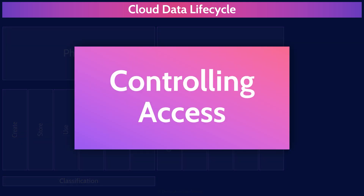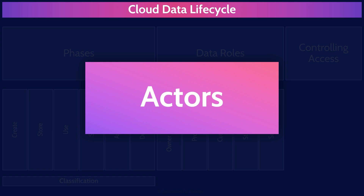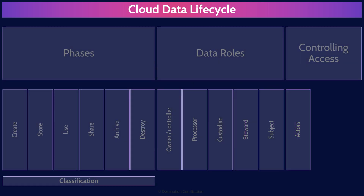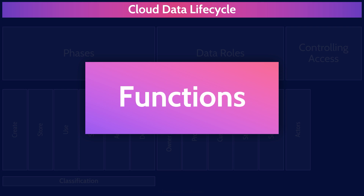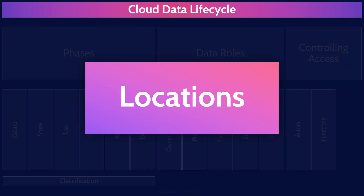The final section of this mind map is controlling access. This is not super important, but these items are in the exam outline and the CSA guidance, so it's worth covering briefly. In order to properly control access to data, think about three things: actors — the subjects, the people or processes that want to access the data; functions — what they do with the data, such as delete, modify, or access it; and locations — both where the data is physically stored and where it is being accessed from by the actors.